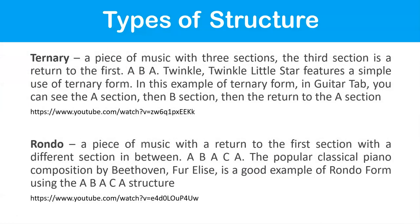Ternary is a piece of music with three sections, where the third section is a return to the first: ABA. Twinkle Twinkle Little Star features a simple use of ternary form. The A section is the opening 'Twinkle twinkle little star,' the B section is 'Up above the world so high, like a diamond in the sky,' and then it returns to the A section — back to 'Twinkle twinkle.'